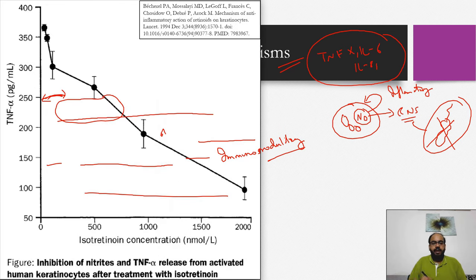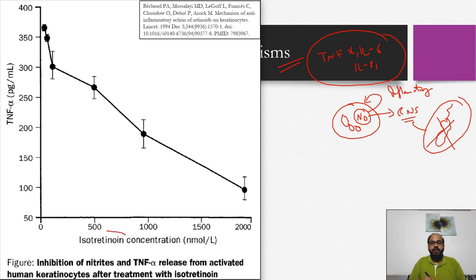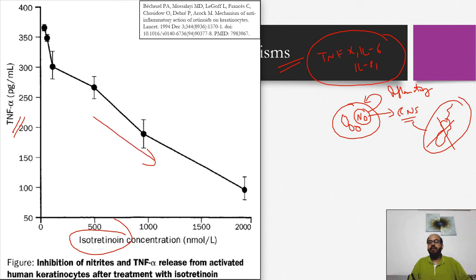In this diagram you can see that with increasing concentration of isotretinoin, we have decreasing levels of TNF-alpha — as the serum concentration increases, TNF-alpha decreases, demonstrating how retinoids act as anti-inflammatory agents.